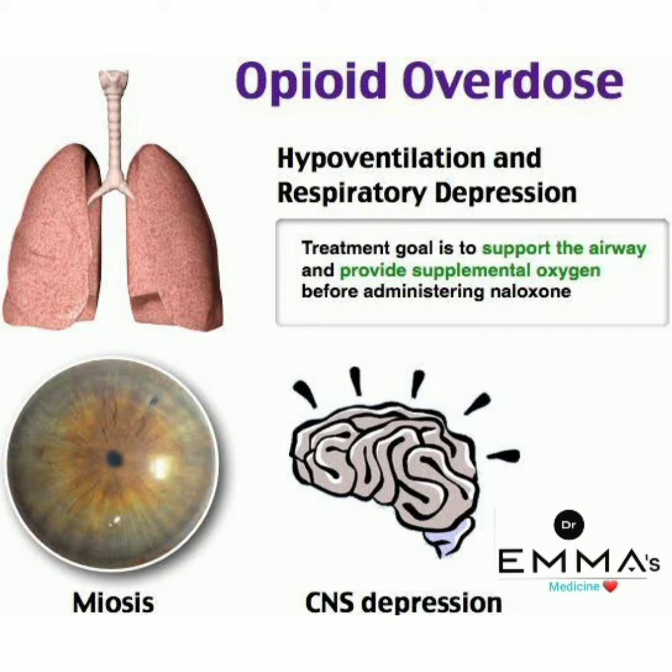The treatment goal is to support the airway and provide supplemental oxygen before administering naloxone. So the first step in opioid overdose is to support the airway and provide supplemental oxygen, and after securing the airway, we give naloxone.